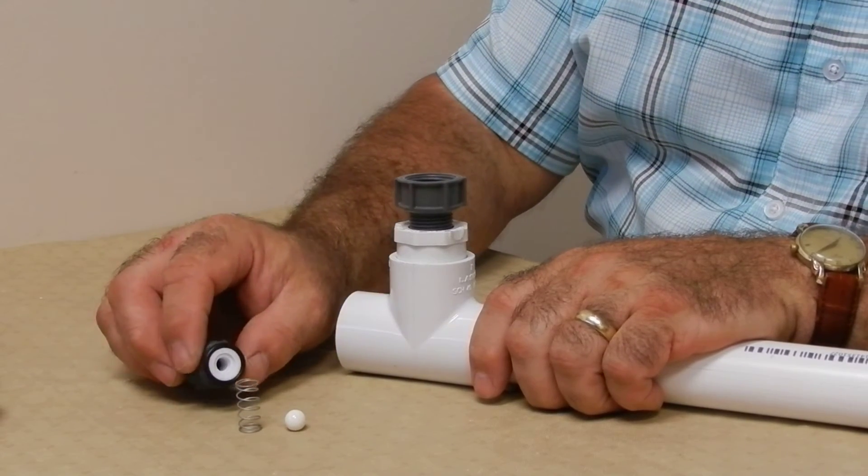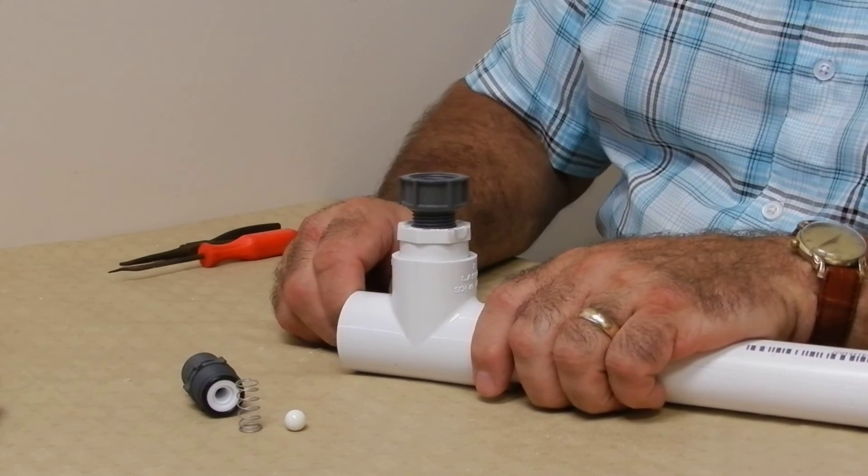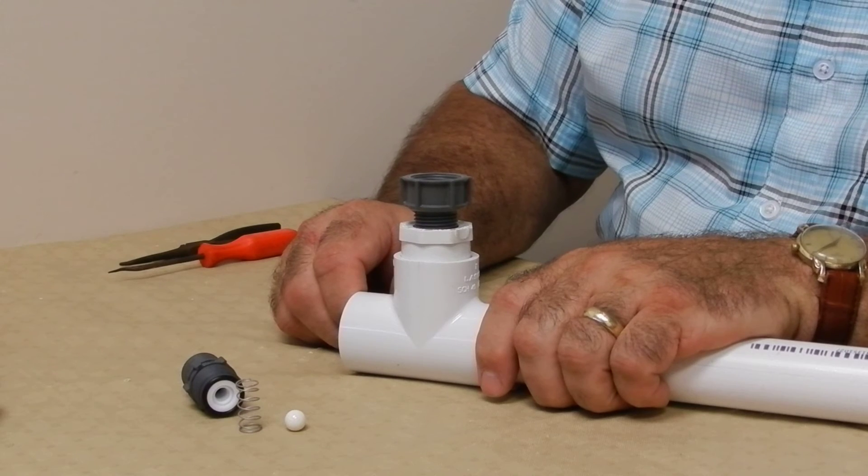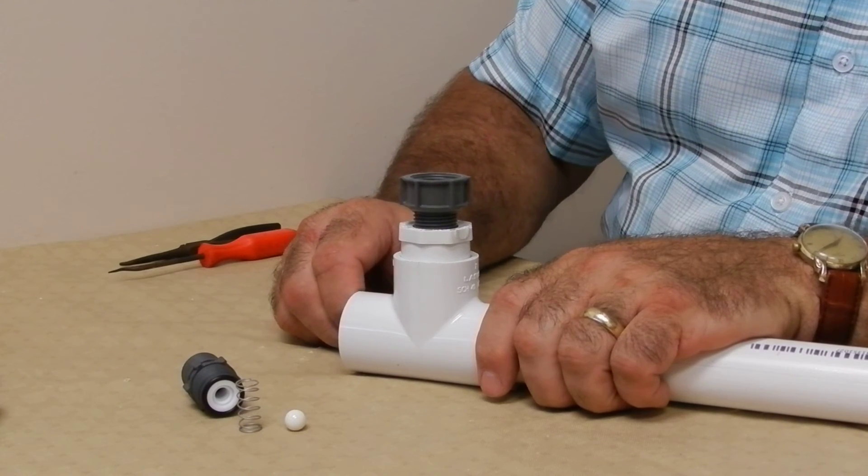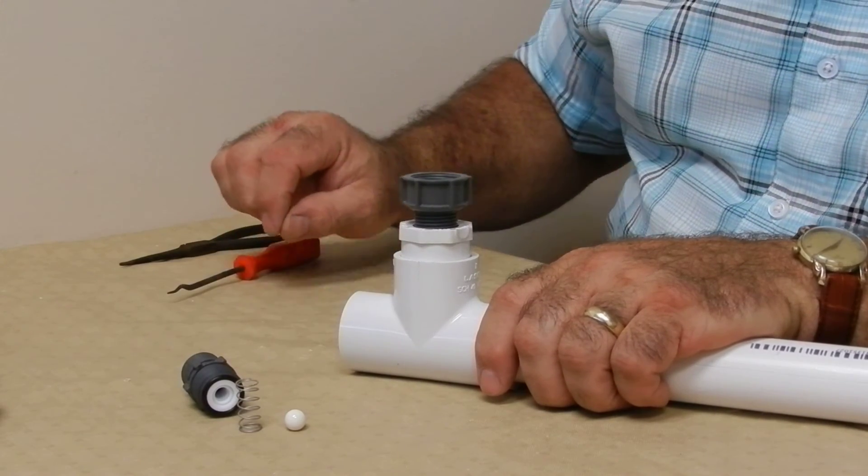Soak these parts in some cleaner. Just get a small cup with some swimming pool acid mixed with water. Be careful with it. Or CLR or LimeAway or similar cleaner. Allow it to dissolve the calcium deposits off the ball, the spring, and the seat. When they're clean, wash them with water.